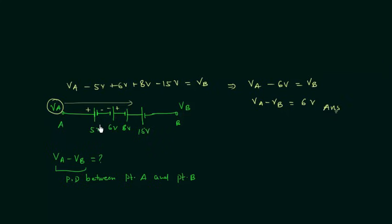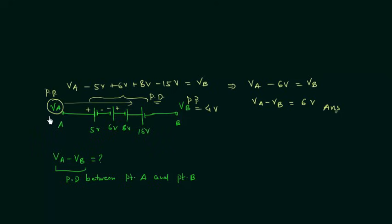Sometimes in the problem you need to calculate the potential at a point. Va and Vb are potentials at points, and all four voltages are potential differences. For example, if Vb is equal to 4 volts and we have to calculate Va, then Va is equal to 6 volts plus Vb. Since Vb is 4 volts, Va is equal to 10 volts. This is the answer.